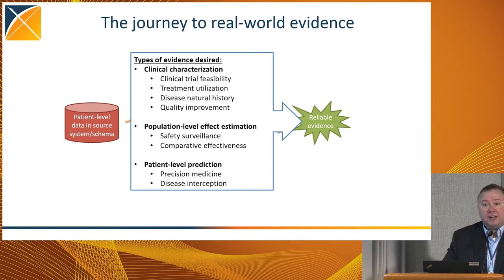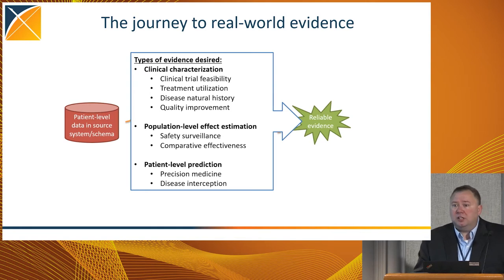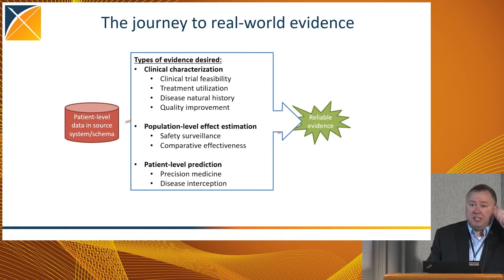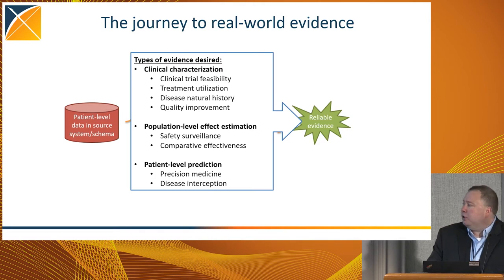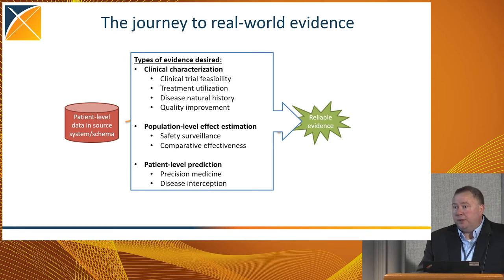When we talk about population-level effect estimation, there's a range of different questions, all centered on causal inference — this can be for safety surveillance activities as well as for comparative effectiveness. Martijn talked a lot yesterday about the work we're trying to do to improve the rigor of population-level effect estimation. And today during the tutorial, you're going to get the experience of seeing both a safety study and a comparative effectiveness study using the same design. When we talk about patient-level prediction, we can think about use cases such as trying to support precision medicine or disease interception. Jenna is going to walk you through how we can actually train, develop, and evaluate prediction models using the Odyssey framework.